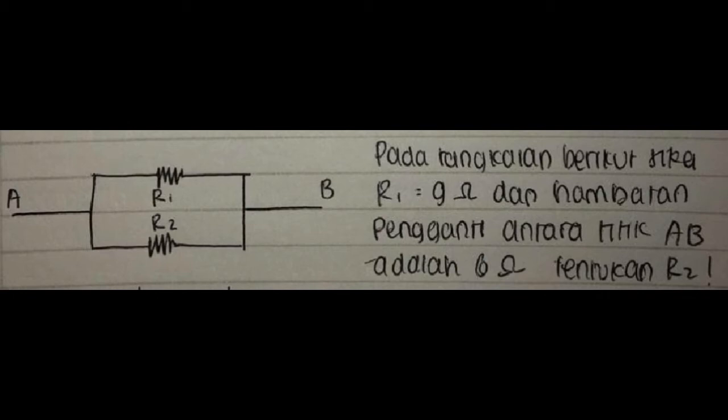Soal 20, pada rangkaian berikut jika R1 sama dengan 9 ohm dan hambatan penggantian antara titik A dan B adalah 6 ohm, tentukan R2.